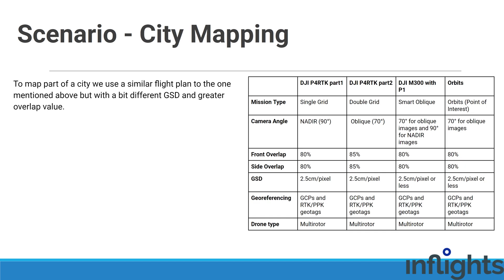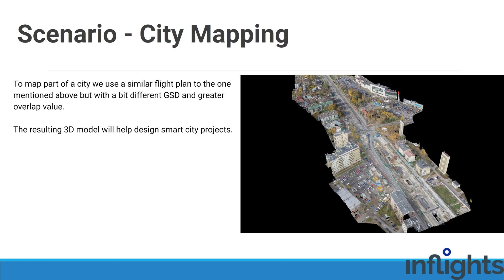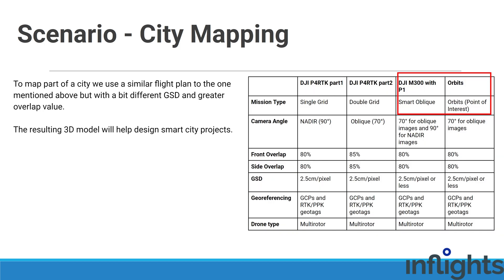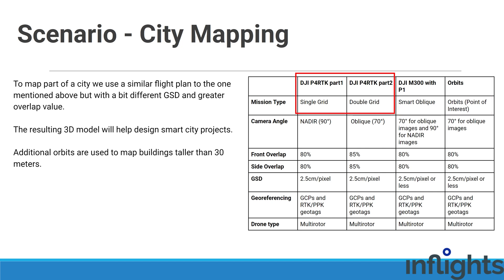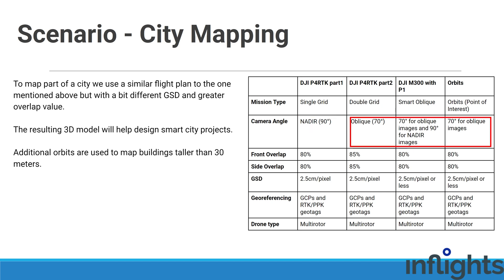To map part of a city, we use a similar flight plan to the one mentioned above, but with a different GSD and greater overlap value. The resulting 3D model will help to design smart city projects. The flight plan consists of a smart oblique flight pattern with additional orbits around buildings taller than 30 meters. The smart oblique flight pattern in DJI Phantom 4 RTK can be created by combining single grid and double grid flight patterns. The camera angle for single grid is 90 degrees and for double grid and smart oblique images it is 70 degrees. Front and side overlap for all mission types is more than the previous flight scenario because we want to reconstruct tall buildings.